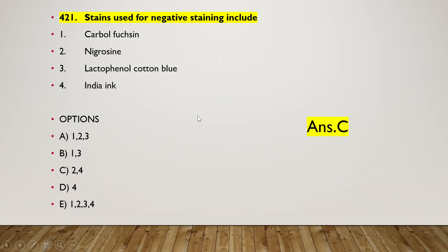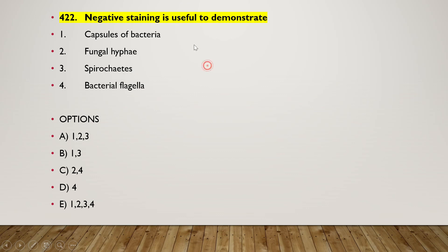Next question: stains used for negative staining include — (1) carbol fuchsin, (2) nigrosin, (3) lactophenol cotton blue, (4) Indian ink. The right answer is option C — two and four is the correct answer. Negative staining is useful to demonstrate — (1) capsules of bacteria, (2) fungal hyphae, (3) spirochetes, (4) bacterial flagellum. The right answer is option B — one and three is the correct answer.